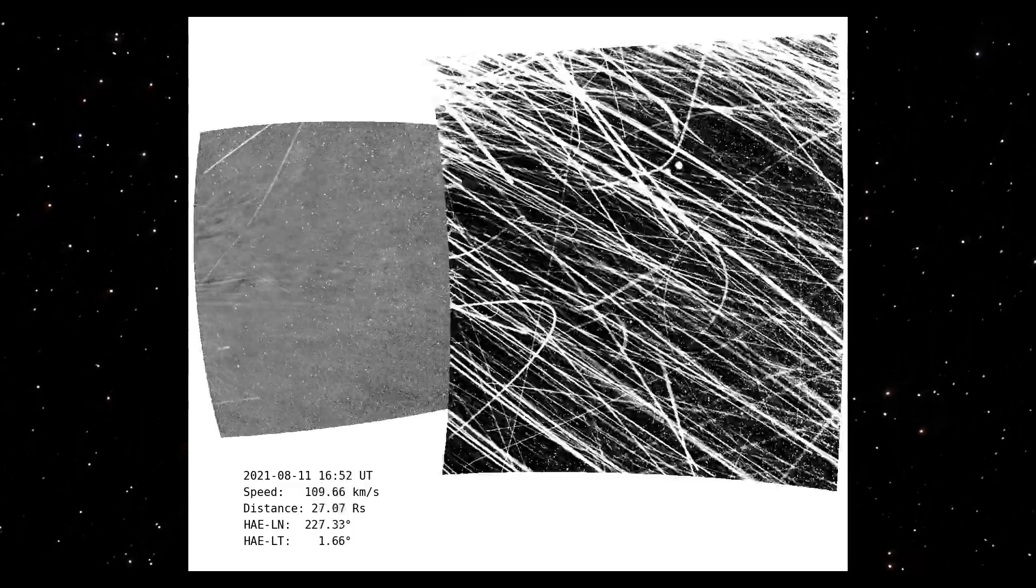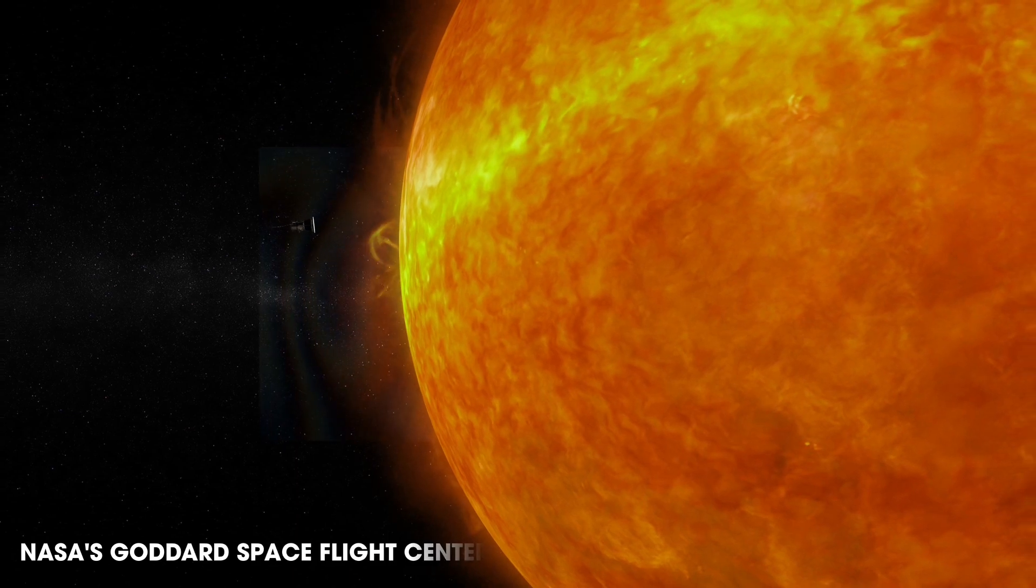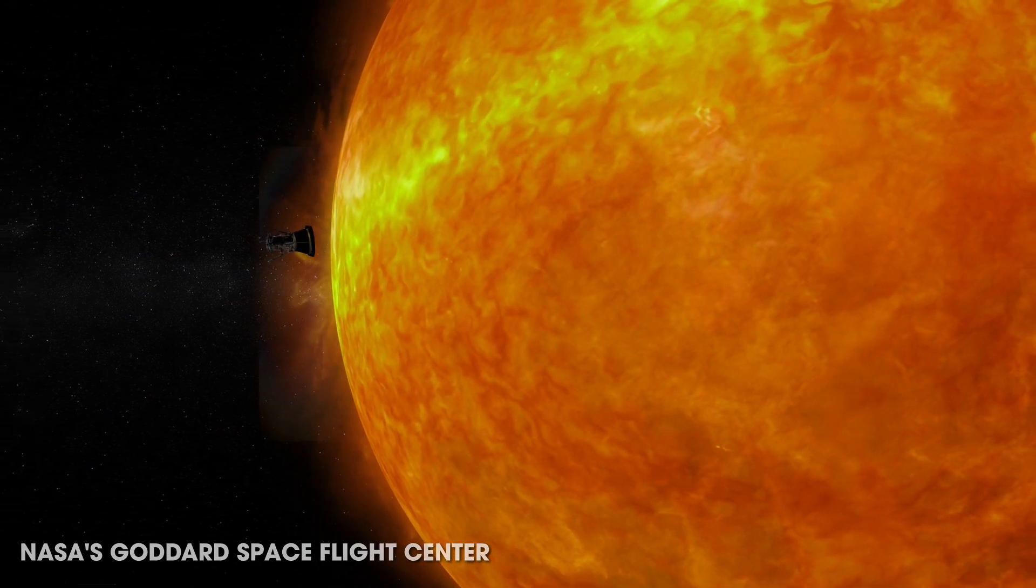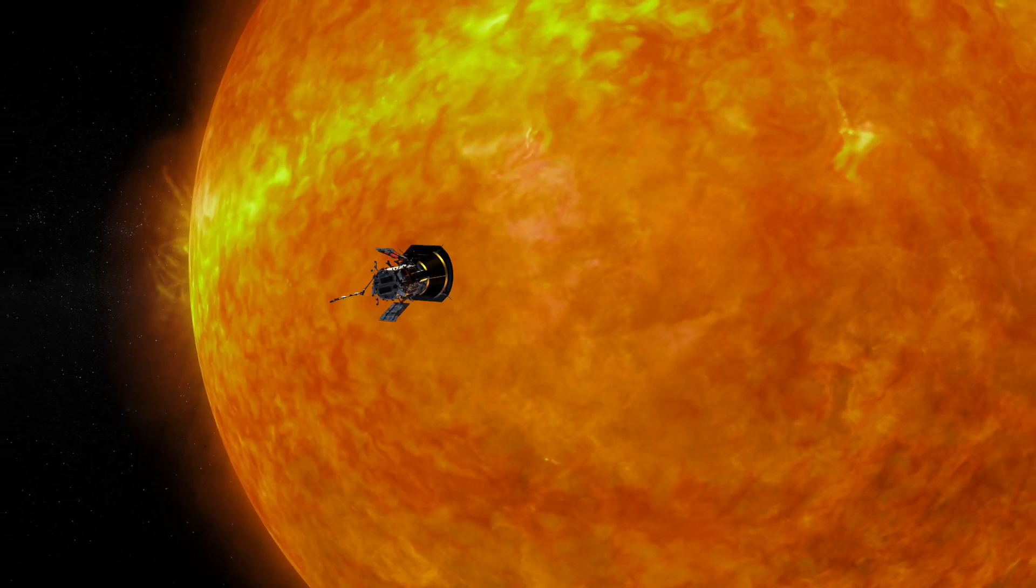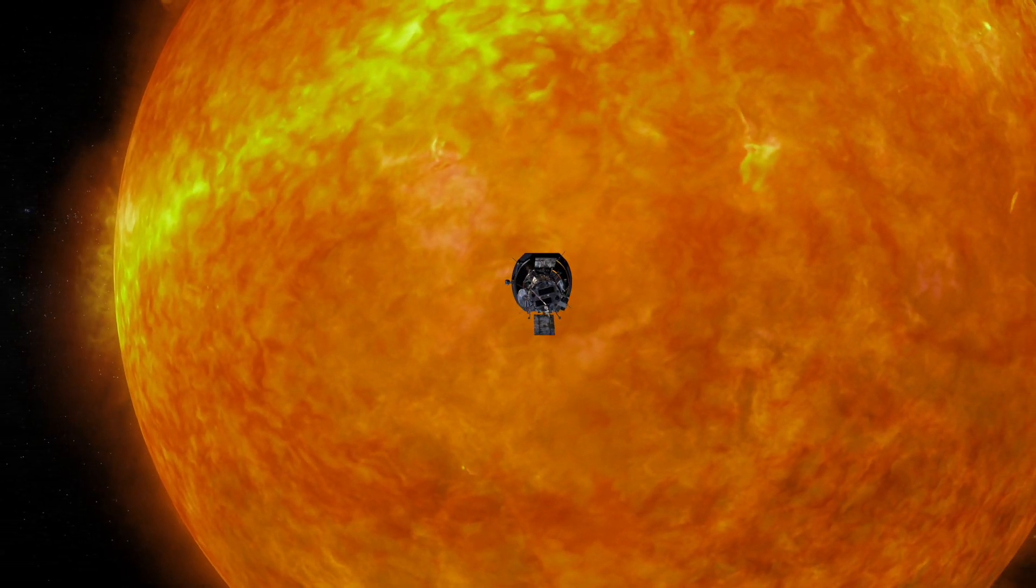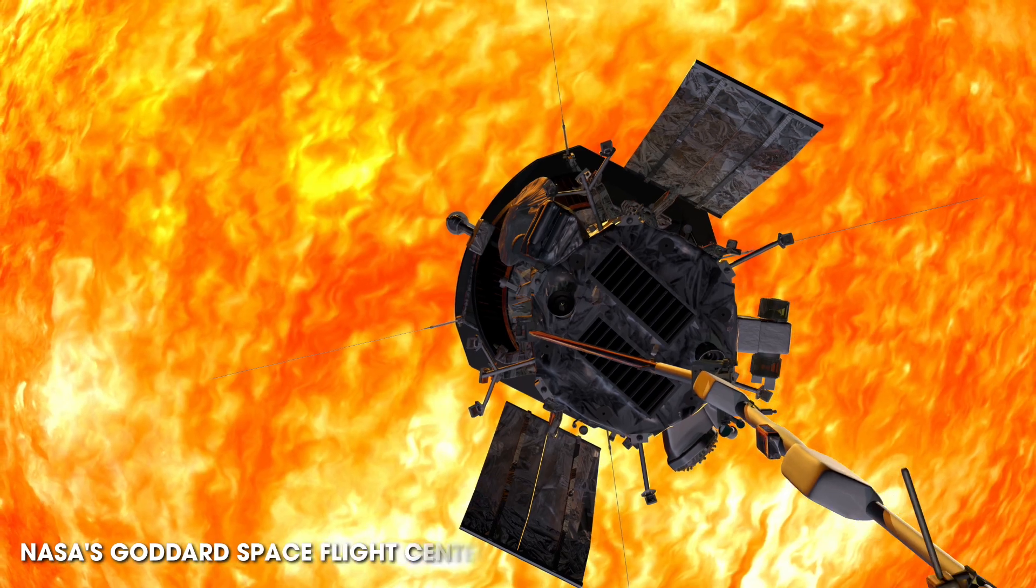This is just the beginning for the Parker probe. Every time the Parker passes close to the sun, it's going to fly through the solar corona. The spacecraft has still another 15 spots around the sun to travel to before completing its mission.